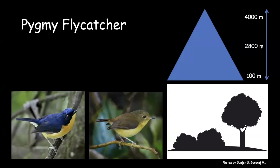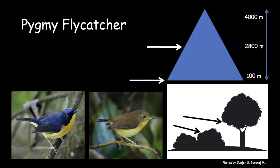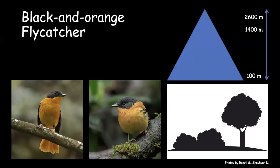Pygmy flycatcher is our tiniest flycatcher, as small as a flowerpecker. It loves mid to higher elevations up to about 2,800 meters and winters all the way down to 100 meters in lower Assam. It prefers undergrowth and lower canopy of trees. The best way to look for them is by pishing — they respond really well. They are very common in and around mid-elevation forest, found in both slightly denser and degraded forest.